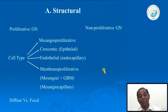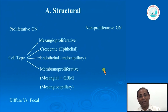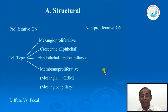Another terminology is membranoproliferative glomerulonephritis. In this, 'membrano' refers to the glomerular basement membrane being thickened or split, and the proliferative component comes from mesangial cells. That is why another term used to describe membranoproliferative GN is mesangiocapillary glomerulonephritis. All these proliferative glomerulonephritides can occur in a diffuse pattern.